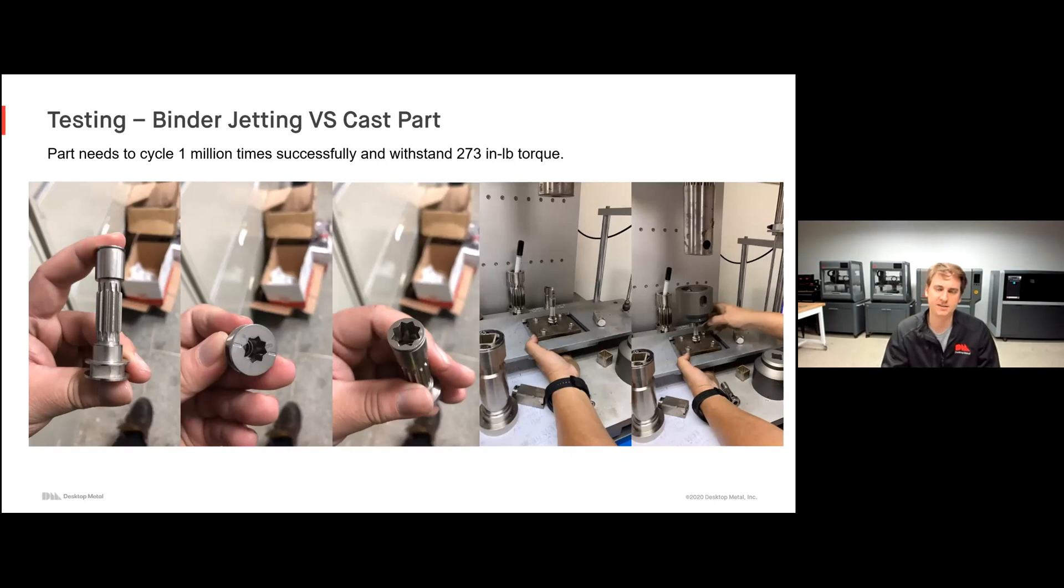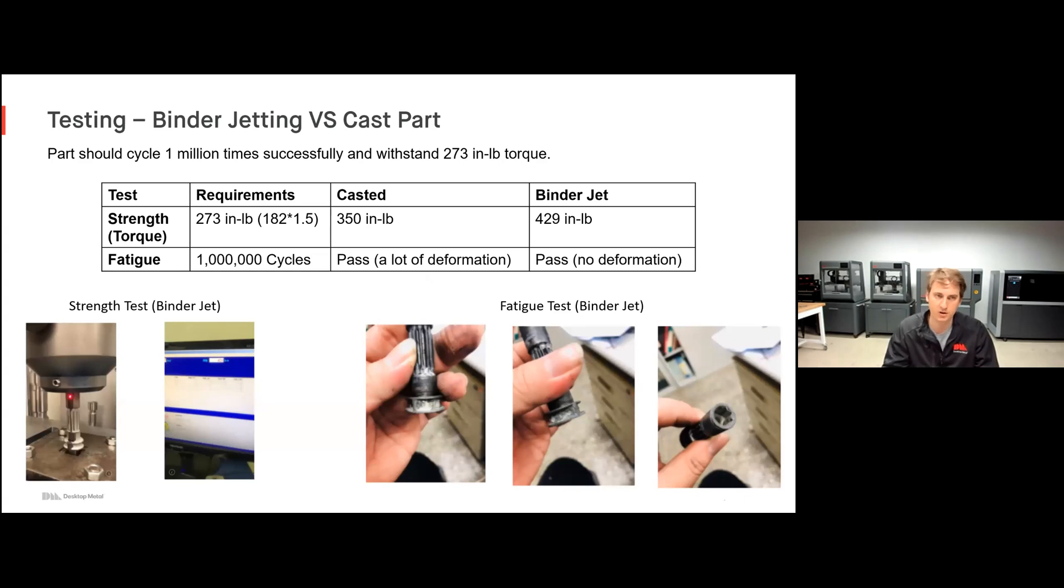One great example here is this example of a binder jetting versus cast component. This is a part that needed to be cycled for 1 million times and withstand at least 273 inch pounds of torque. This part was originally being cast, but the customer wanted to see can I replace this geometry with a printed geometry and get the results that I need? The answer was yes. You can see the results here. With the cast component, it was able to withstand 350 inch pounds of torque. The binder jet component that was printed on the Shop System was able to withstand 429 inch pounds. So it exceeded that of the cast component and it generously exceeded that of the requirement for the part. When it came to fatigue, it needed to withstand 1 million cycles. The cast part, while it did pass, experienced lots of deformation. The binder jet part of course passed as well, but with very little to no deformation, actually exceeding that of the cast component and of course exceeding the requirements of the part needed. So when it comes to comparing a part to that of a cast component, generally you're seeing material properties that are exceeding those of the same material that's being cast.